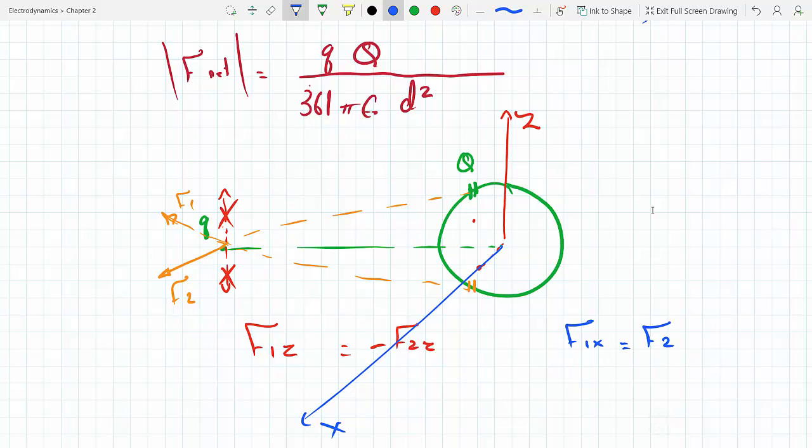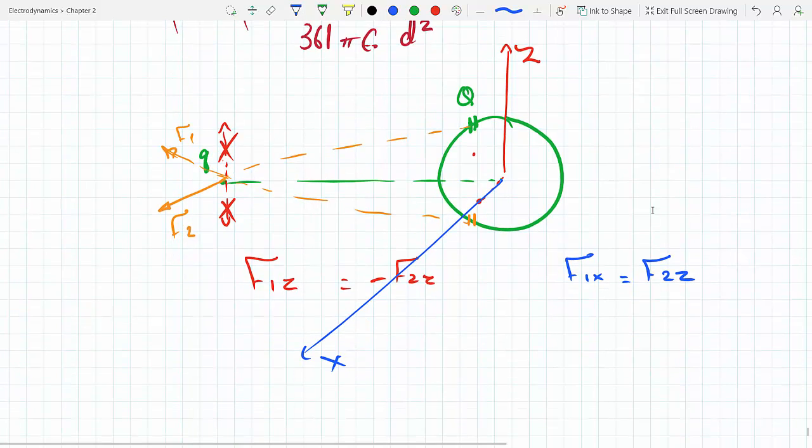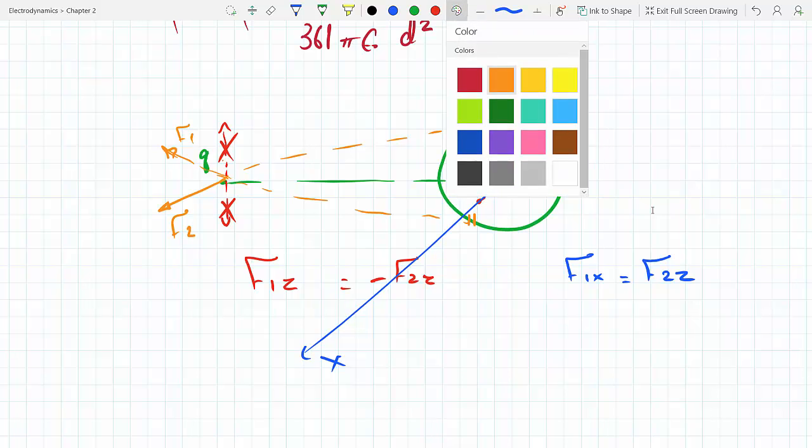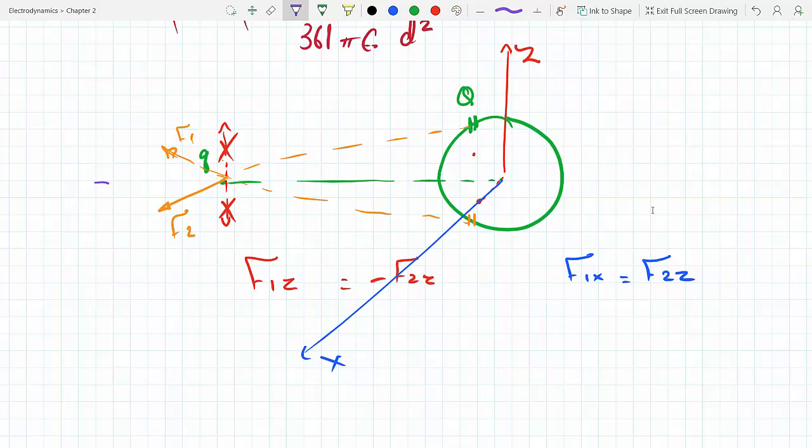And the only thing I'm left with—notice that the only thing I'm left with is the z component. The z components on the sphere survive. Sorry, not the z, I meant the y, if we call this the y.